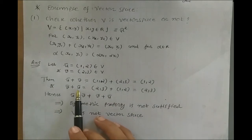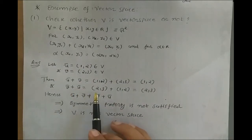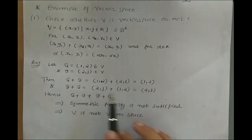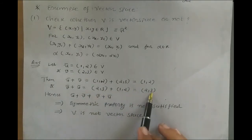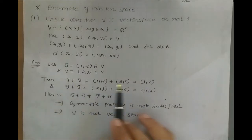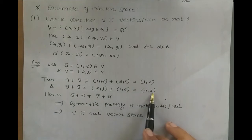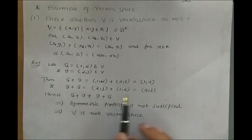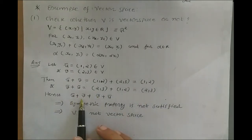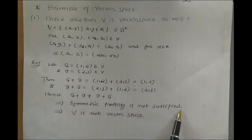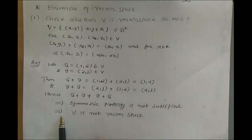Similarly, V̅ + U̅ = (2, 3) + (1, 2) = (2, 3), since x₁ = 2 and y₁ = 3. Now U̅ + V̅ = (1, 2) and V̅ + U̅ = (2, 3). Both are not the same, so U̅ + V̅ ≠ V̅ + U̅. Therefore the commutative property is not satisfied, which implies that V is not a vector space.